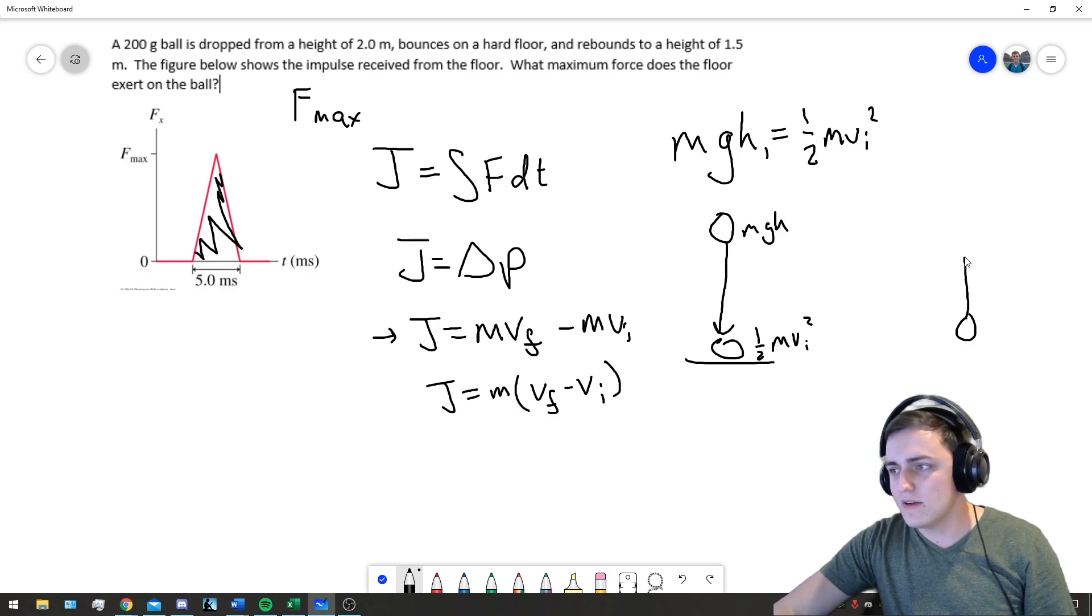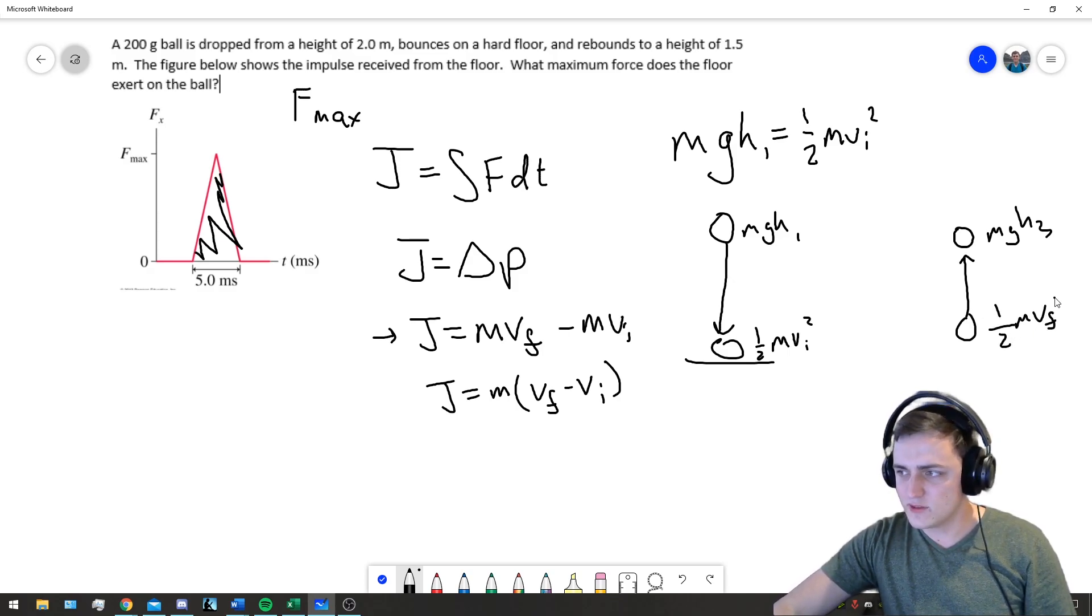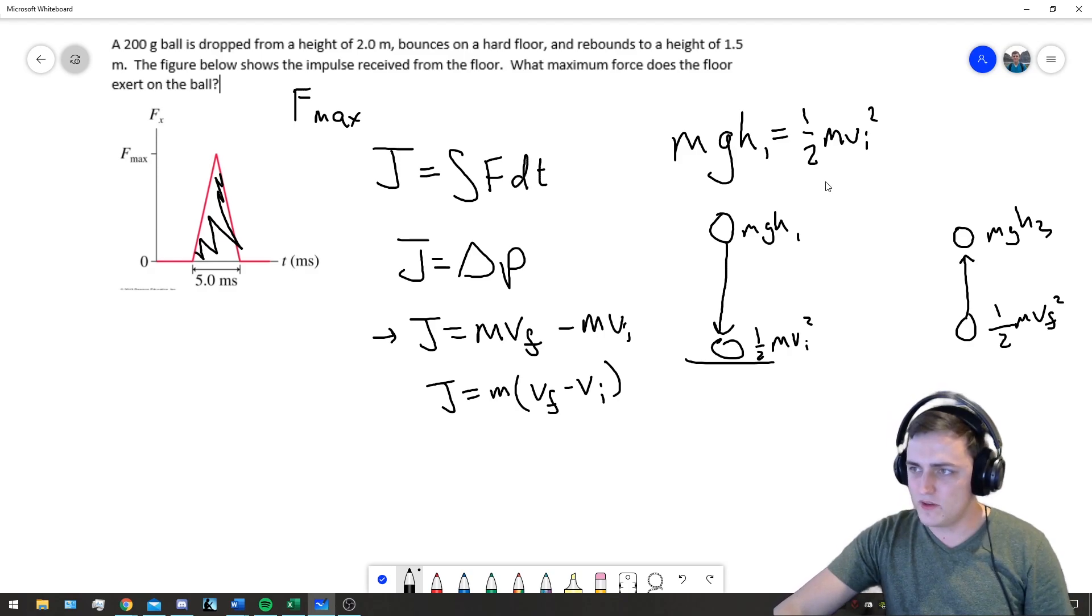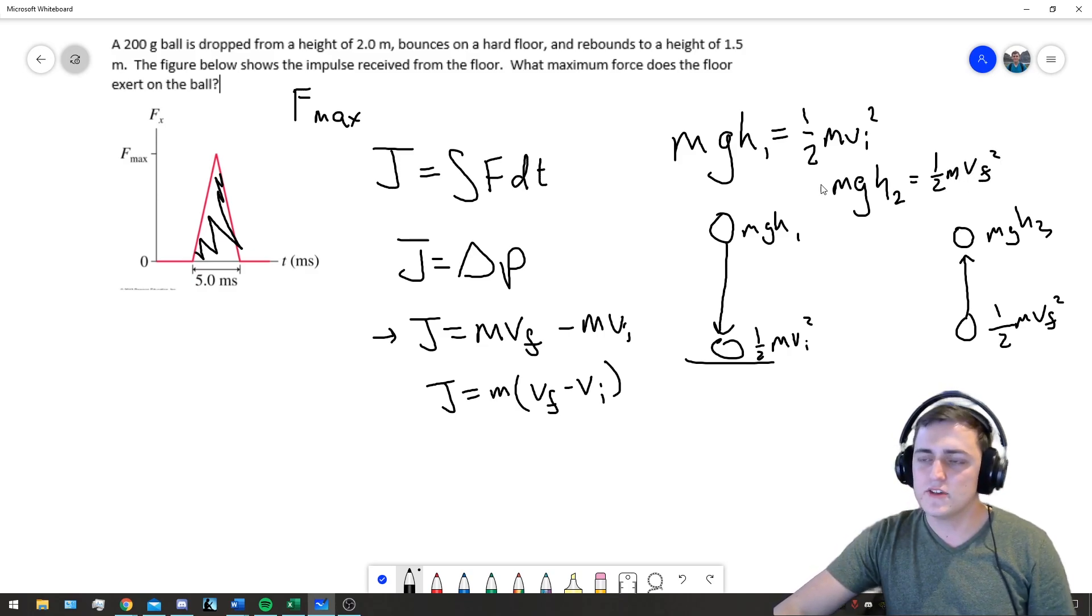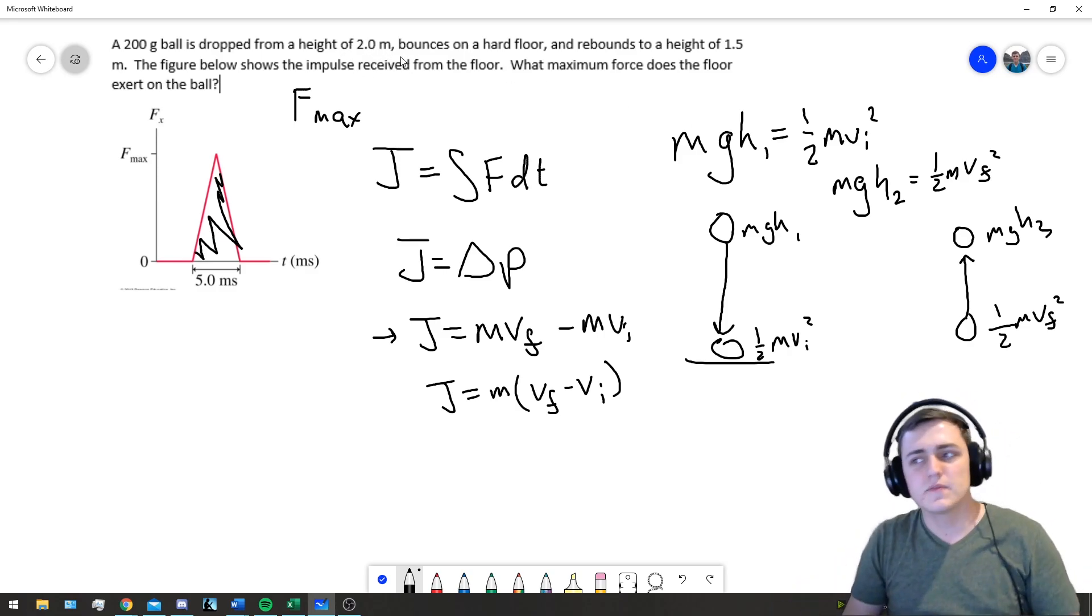We leave the ground and go back up to a new MGH, MGH_2, and then we leave with M v_final squared. We can draw the same conclusion. MGH_2 this time is one half M v_final squared. So we can use our H_1 of two meters.